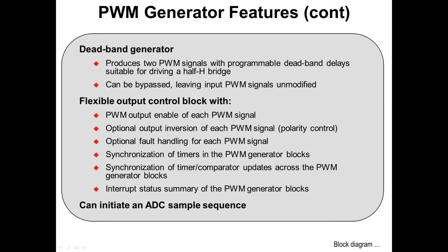The PWM generators also feature a deadband generator and a flexible output control block. The deadband generator inserts programmable deadband delays into the two PWM output signals to protect half-H-bridge circuitry. The deadband generator can be bypassed, leaving the PWM signals unmodified. The output control block provides PWM output enable, polarity control, and fault handling for each PWM signal.